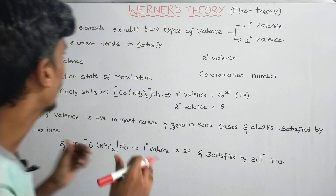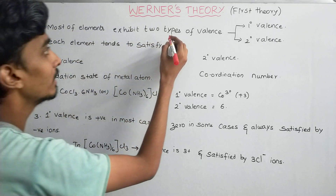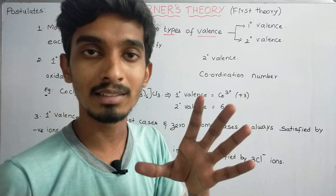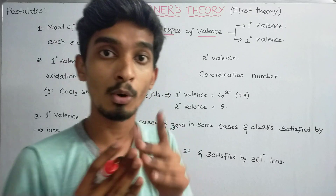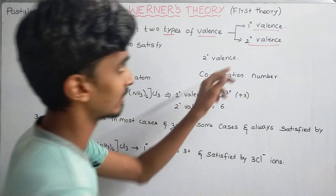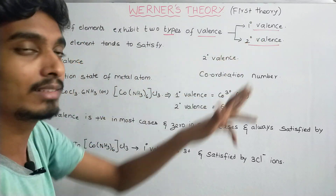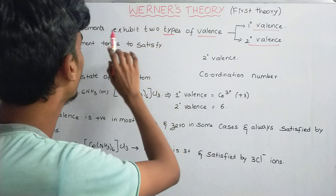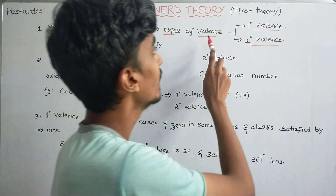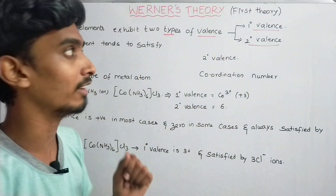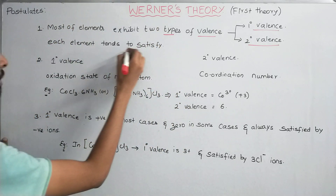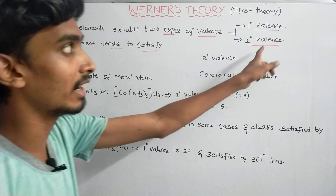So what do we know about Werner's Theory? Most of the elements exhibit two types of valence. That means there are two types of valence for most elements. What is valence? One is primary valence and the second is secondary valence. Each element tends to satisfy both types of valence.